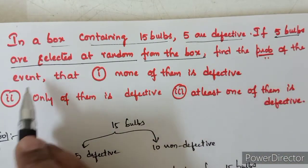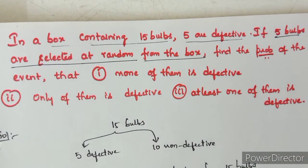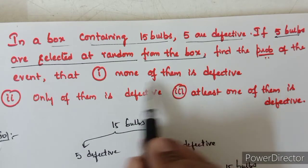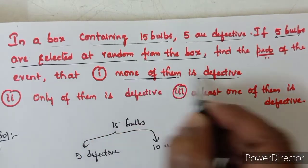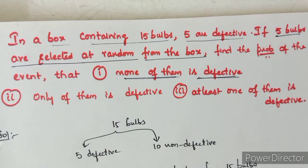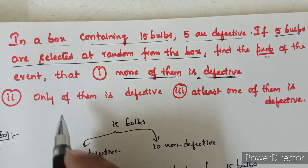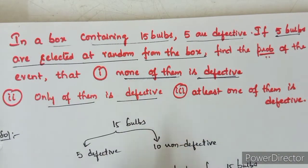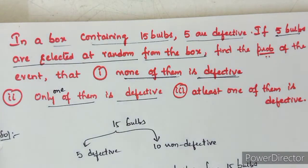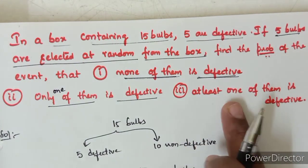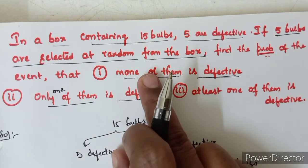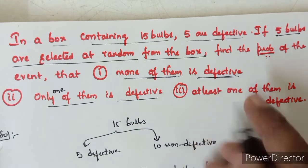We need to find the probability of three events. The first event is that none of the 5 selected bulbs is defective. The second event is that only one of them is defective. The third event is that at least one of them is defective — which is the opposite of the first question.